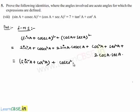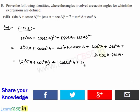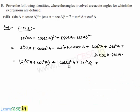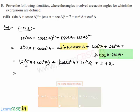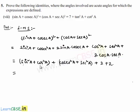We group cosecant squared a plus secant squared a together. Here 2 times sin a times cosecant a equals 2, since sin a into cosecant a is 1. Similarly, 2 times cos a into secant a equals 2, since cos a into secant a is 1. Using the identity sin squared a plus cos squared a equals 1, we replace that group with 1 and get 1 plus 2 plus 2, which is 5 plus cosecant squared a plus secant squared a.